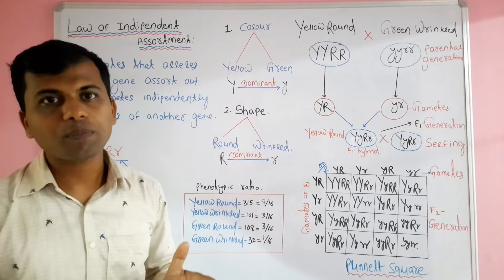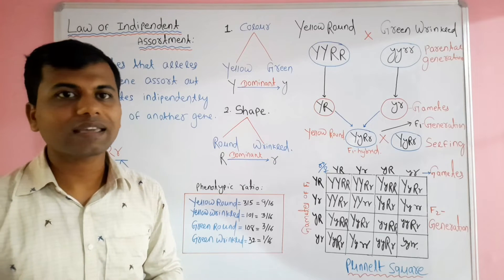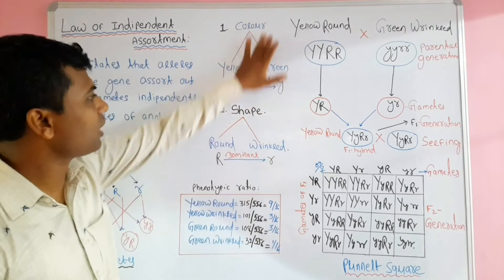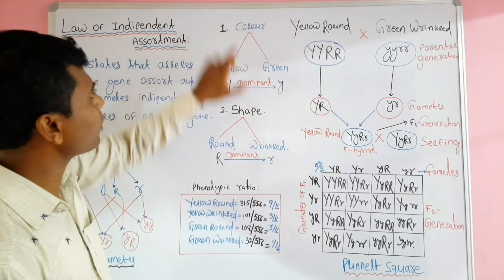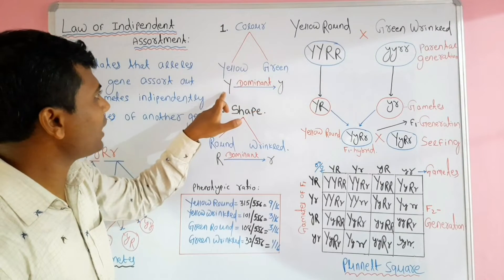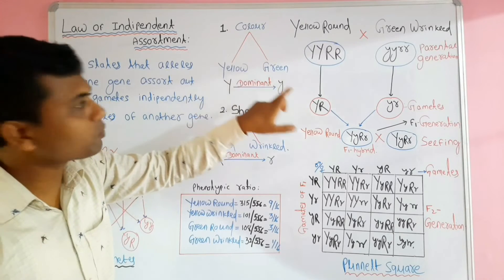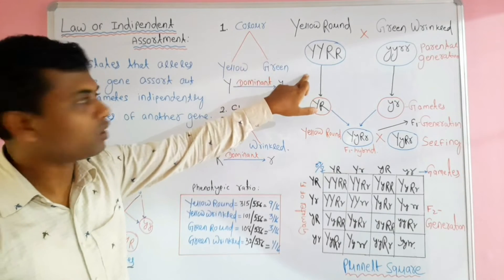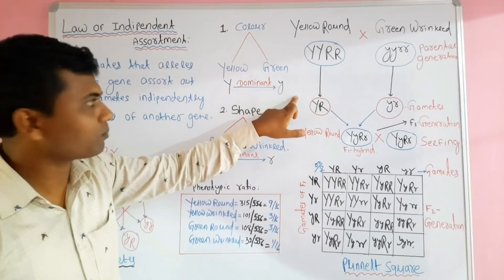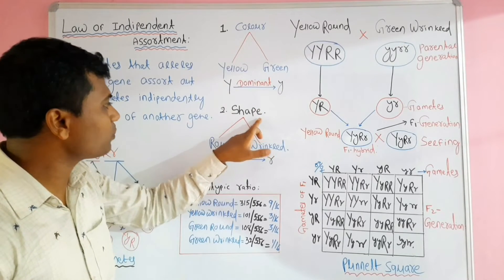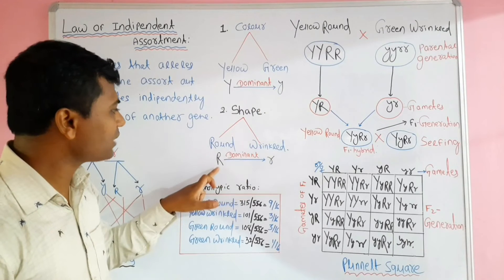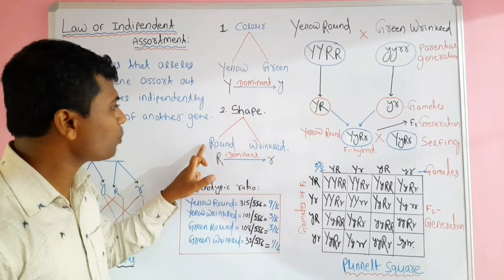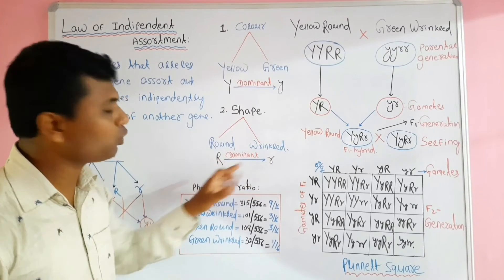We can explain the law of independent assortment using Mendel's dihybrid cross. In the dihybrid cross, Mendel considered two characters of the pea plant: color and shape. Color has two contrasting forms — yellow and green. Capital Y is the allele responsible for yellowness and small y is the allele responsible for greenness; yellow color is dominant over green, so capital Y is dominant to small y. Shape has two contrasting forms — round and wrinkled. Capital R is the allele which controls roundness and small r controls wrinkledness; round is dominant to wrinkled, so capital R is dominant to small r.